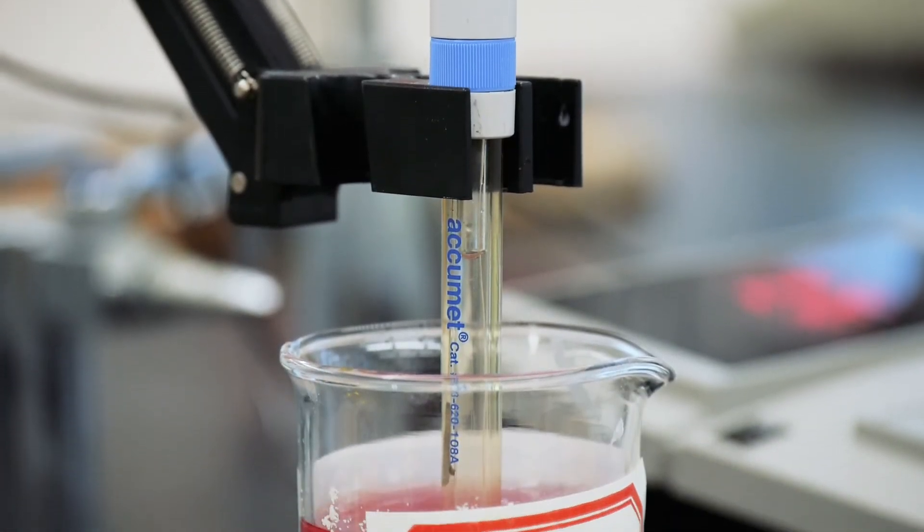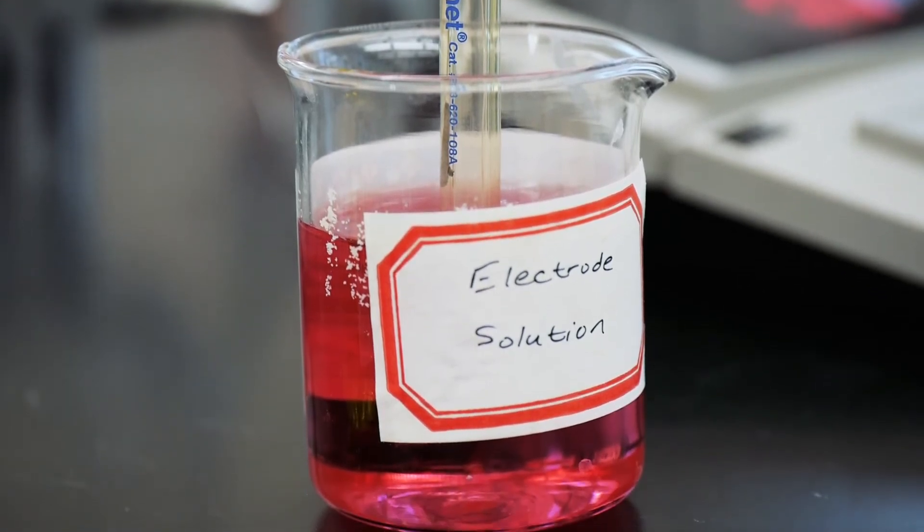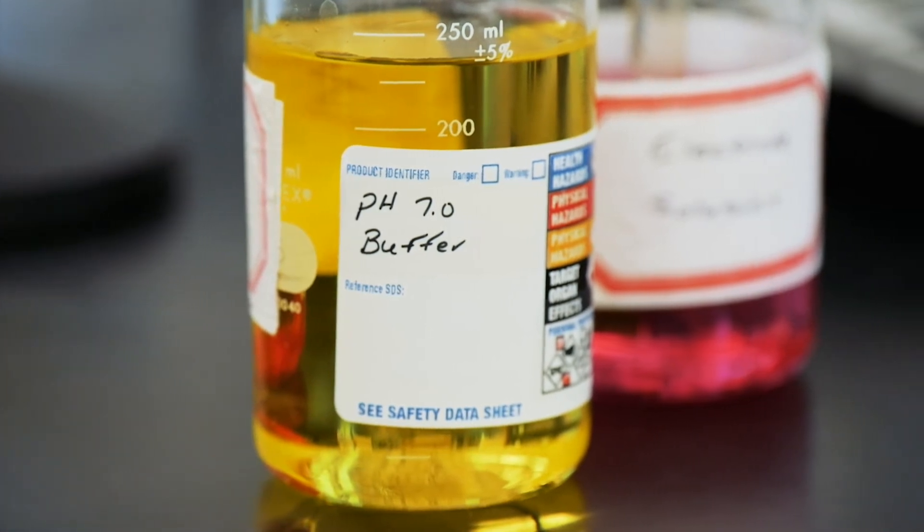You'll have a pH meter available on your benchtop today. Before using it, though, it must be standardized against a buffer solution of pH 7. To do that, a buffer solution that has a known pH of 7 is provided.